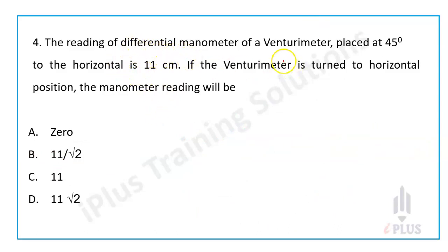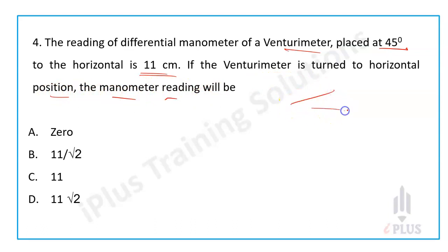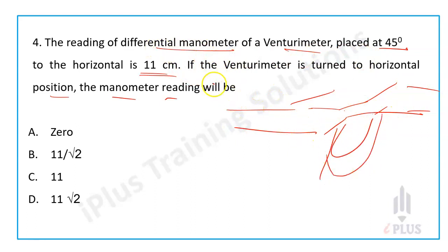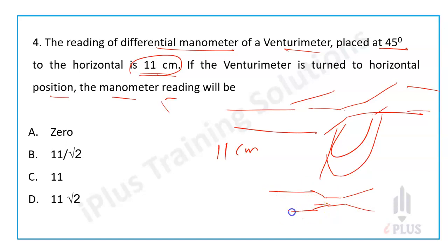Fourth question: The reading of a differential manometer of a venturimeter placed at 45 degrees to the horizontal is 11 cm. The venturimeter is then turned to a horizontal position. What is the manometer reading in the horizontal position?